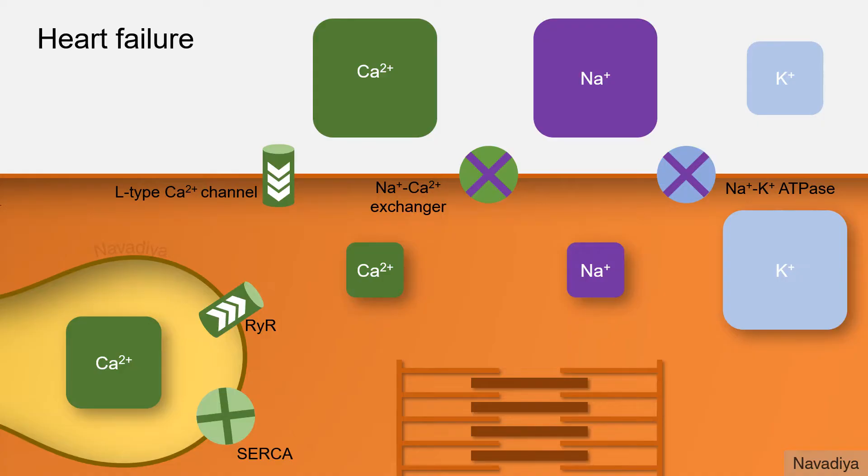In heart failure, contraction of cardiac myocytes becomes weak. Digoxin improves the contraction as a result of multi-step process.